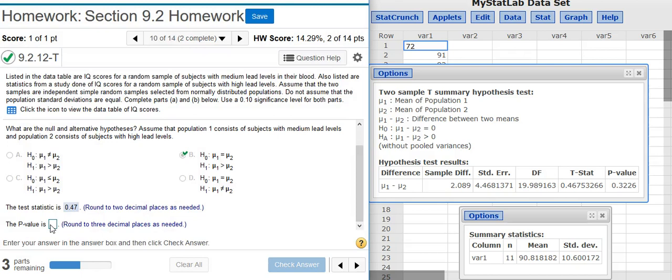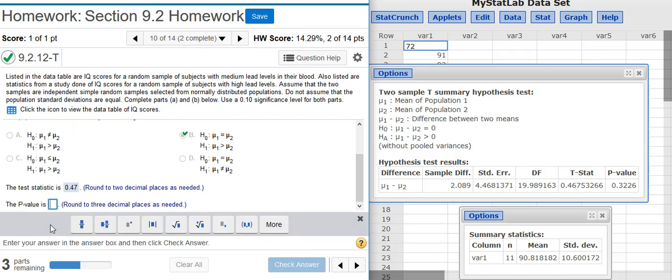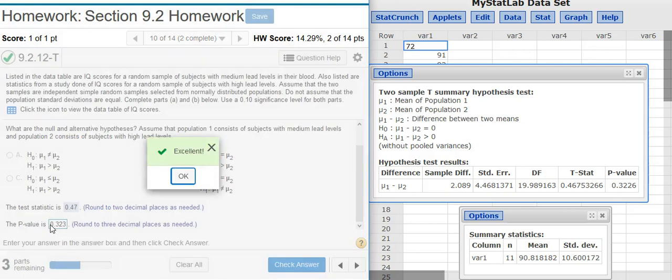Now the next part is asking for the p-value. That's the last value there in the data table right next door to the test statistic. I'm asked to round to three decimal places. Excellent!